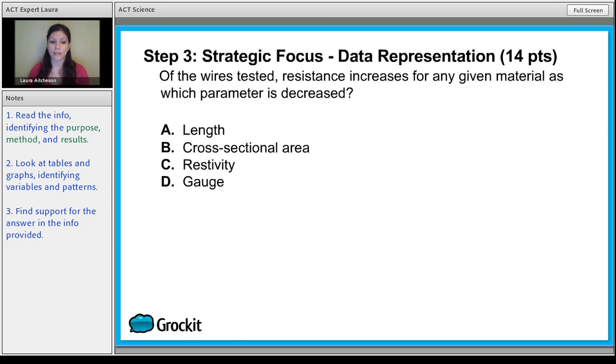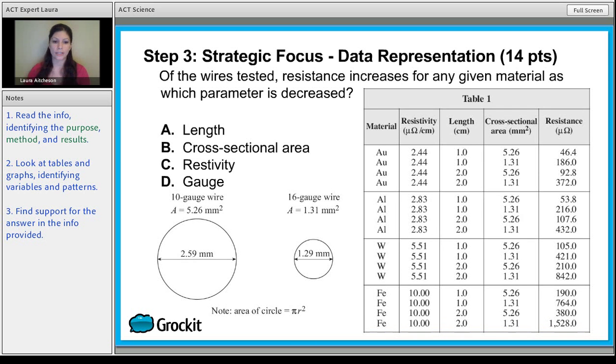Starting with question number one, gauge is going to come in handy right here. Of the wires tested, resistance increases for any given material as which parameter is decreased? Starting with length, we want to decrease. So if we go from two to one, we'll draw an arrow from two to one. We go from 92 to 46, so we decrease length. The reason I hopped down to there is because we want the same cross-sectional area. When manipulating one variable, we don't want to change anything else. So if we go from two to one with same cross-sectional area, we decrease resistance. That's not what we wanted.